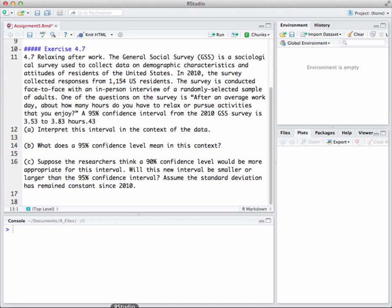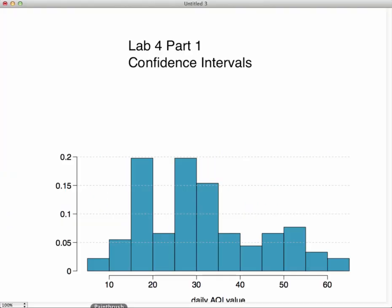The survey is conducted face-to-face with in-person interviews of a randomly selected sample of adults. One of the questions on the survey is: after an average workday, how many hours do you have to relax or pursue activities that you enjoy? A 95% confidence interval for the 2010 GSS survey is from 3.53 to 3.83 hours. Interpret this interval in context of the data.